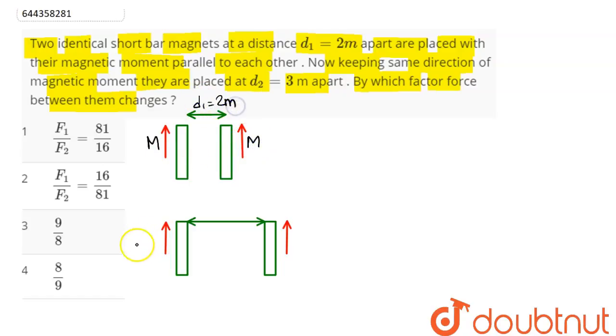Now, also with magnetic moments M and M, the distance is given as 3 meters. For two point charges, force is inversely proportional to the square of the distance.